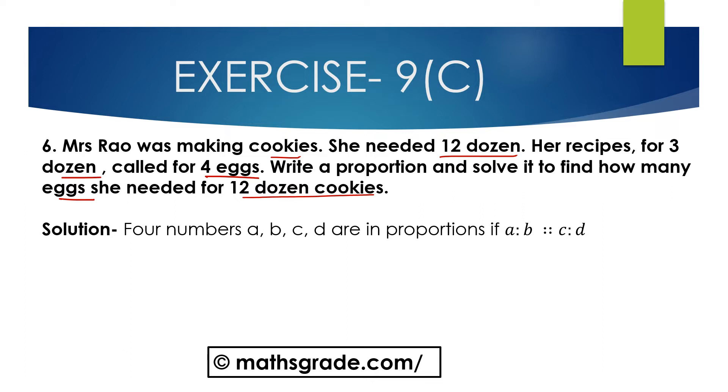So four numbers A, B, C, D are in proportion. Then we can write A to B is proportional to C to D.